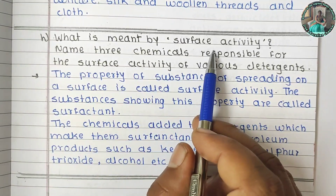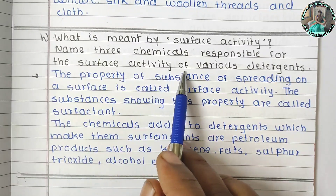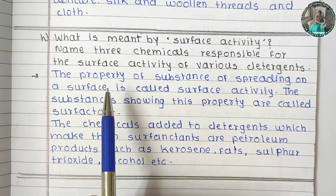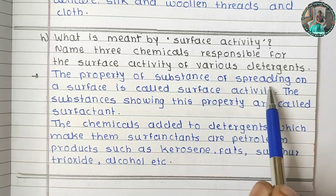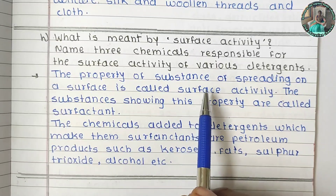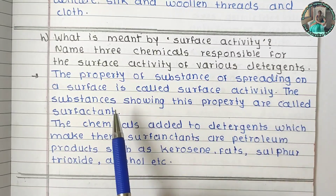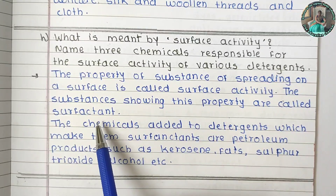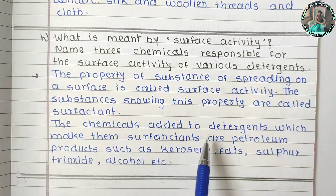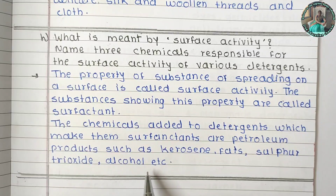What is meant by surface activity? Name three chemicals responsible for the surface activity of various detergents. The property of a substance of spreading on a surface is called surface activity. Substances showing this property are called surfactants. The chemicals added to detergents which make them surfactants are petroleum products such as kerosene, fats, sulfur, sulfur dioxide, and alcohol.